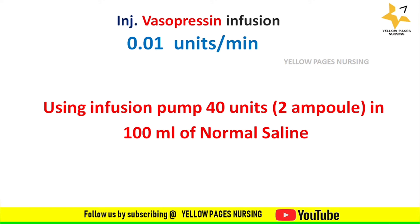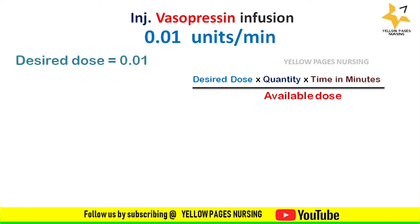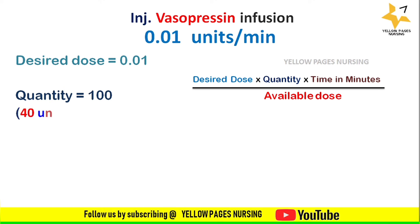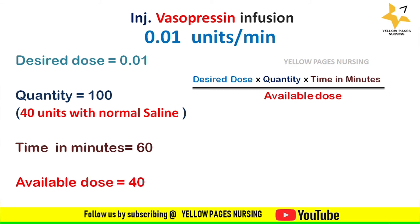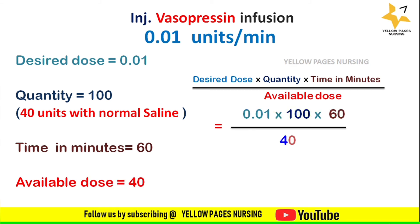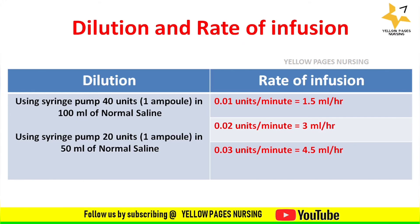Using an infusion pump with 40 units (2 ampoules) diluted in 100 ml normal saline: the desired dose is 0.01, quantity is 100, time in minutes is 60, and available dose is 40. Applying all into the formula we get the answer: 1.5 ml per hour — the same as the 50 ml dilution.